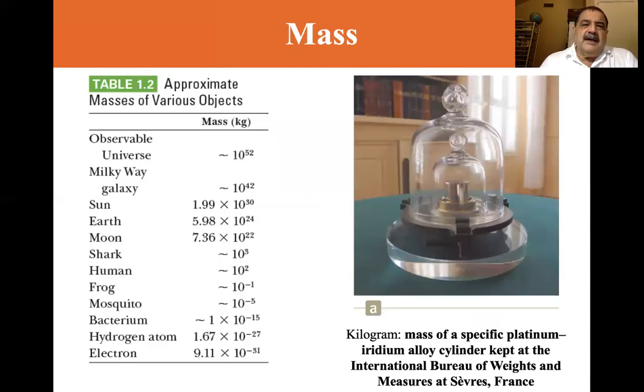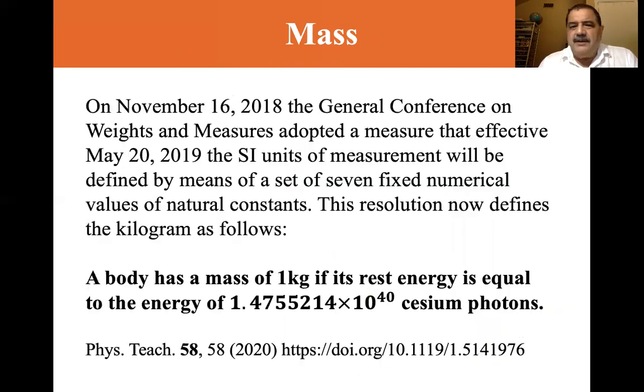Let's get to the mass. The kilogram is a mass of a specified platinum-iridium alloy cylinder kept at the International Bureau of Weights and Measures at Sèvres, France. That is no longer the standard. It becomes confusing when we talk about the new standard adopted in November 16th, but became effective May 20th, 2019.